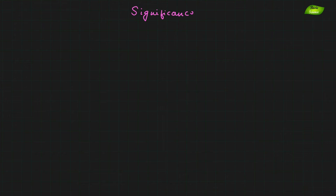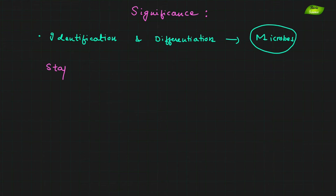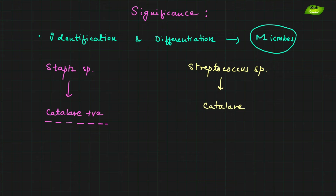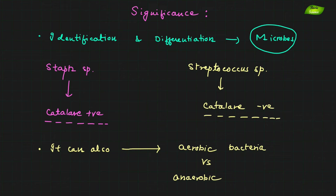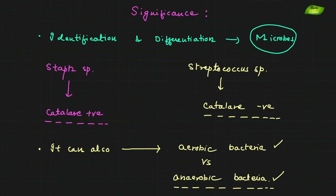The significance of this test is to identify or differentiate microorganisms. For example, you can differentiate Staphylococcus species, which are catalase positive, from Streptococcus species, which are catalase negative. On blood agar plates with colonies, you can differentiate them based on the catalase reaction. The test can also differentiate between aerobic and anaerobic bacteria, since they give different catalase reactions. This test is very important in microbiology — the catalase reaction is very fast and bubble production is observed immediately.